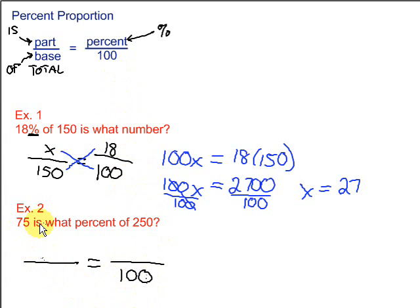75 is. Is suggests the part right here. So 75 is going to go on the top. What percent of 250? Of 250. This of is the key word. That is the base. So 250 goes on the bottom right here.